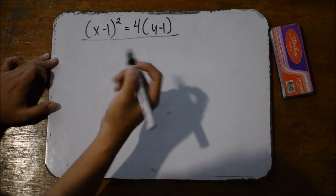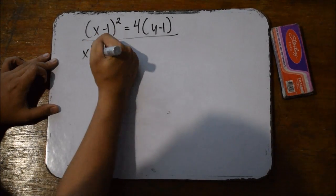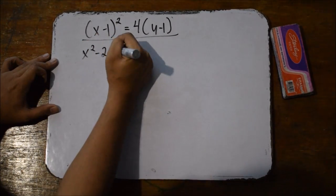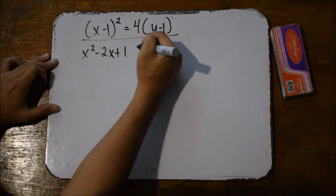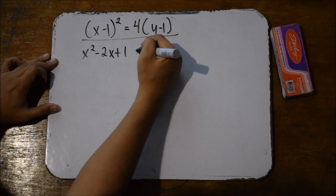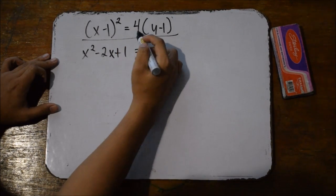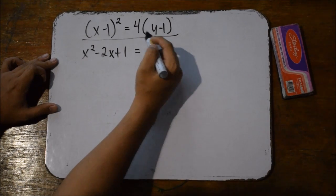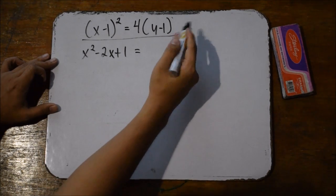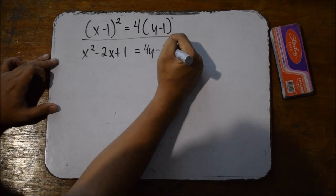We're going to square the binomial: square the first term, double the product of the first and second, and square the last term. The next thing to do is distribute 4 to the equation — 4 times y and 4 times negative 1 — giving us 4y minus 4.